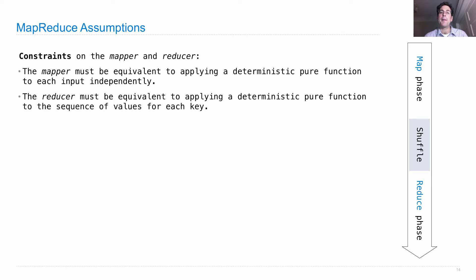The reducer must be equivalent to applying a deterministic pure function to the sequence of values for each key. Similar reasons apply.